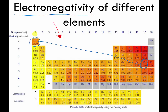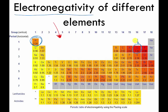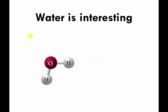I don't want you to memorize this chart or think about it too deeply. I just want you to realize that different elements have different amounts of electronegativity, so they will hog electrons to a greater or lesser extent depending on what they are and who they're sharing with. I'm going to highlight oxygen and hydrogen for the next slide. Oxygen is pretty electronegative — a big electron hog — especially compared to hydrogen. So if oxygen is sharing electrons with hydrogen, the oxygen is going to hog the electrons, giving the oxygen a little bit of a negative charge and the hydrogen a little bit of a positive charge.